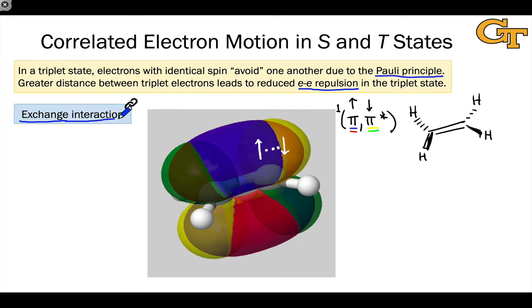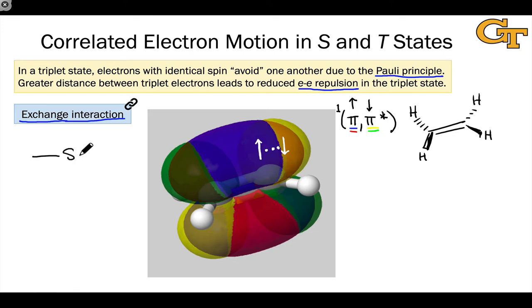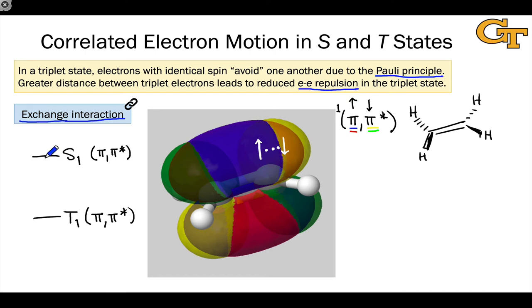We've only touched the tip of the iceberg as far as what the exchange interaction entails — we're just trying to develop an intuitive visual understanding, our quantum intuition. The linked article dives into the exchange interaction in more detail. The exchange interaction is responsible for the energy difference between singlet and triplet states with the same electron configuration — for example S1 and T1 in pi-star states. We'll see very shortly that delta EST depends profoundly on the nature of the chromophore and the nature of the SOMOs in particular — the nature of the excitation and the occupancies and shapes of the singly occupied molecular orbitals.